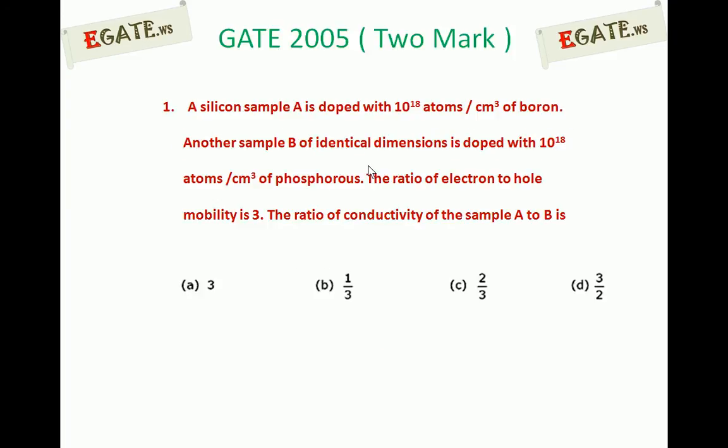This is first two mark question came in GATE 2005. A silicon sample A is doped with 10^18 atoms per cm³ of boron, another sample B of identical dimensions is doped with 10^18 atoms per cm³ of phosphorus. The ratio of electron to hole mobility is 3. The ratio of conductivity of sample A to B is: (a) 3, (b) 1/3, (c) 2/3, (d) 3/2.